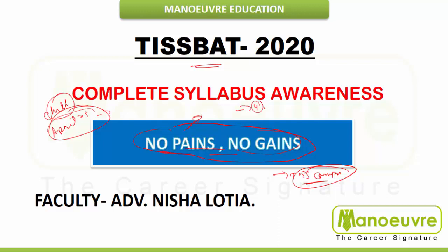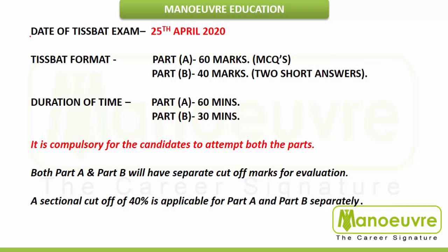All four sections have to be given equal justice to boost your score. The first step in your preparation has to be complete syllabus awareness. Here at Manuverse, we provide you the content and relevant material, and if referred to in the proper way, I'm sure it will give you the maximum score in your TIS BAT examinations.